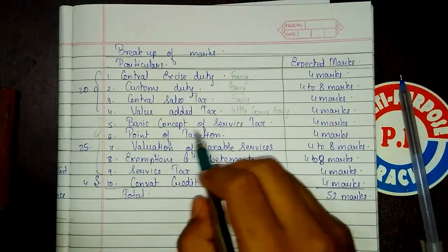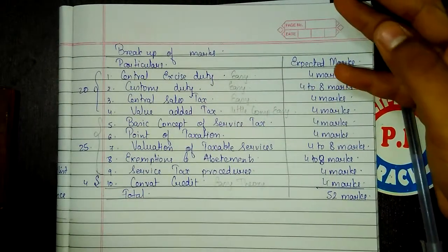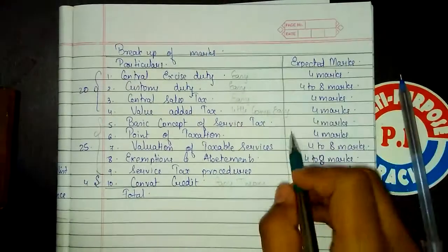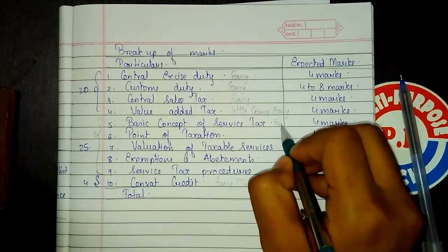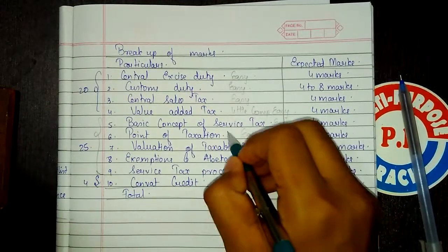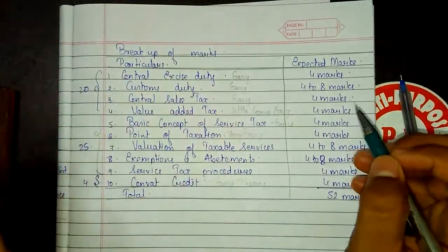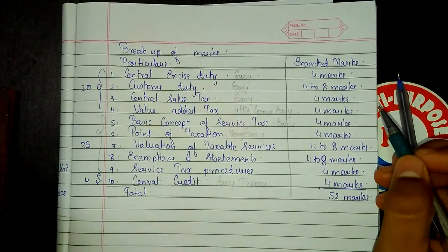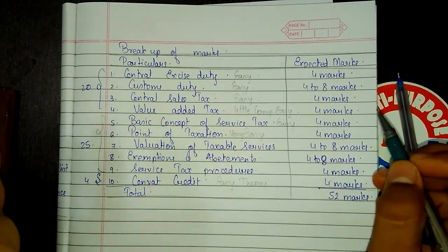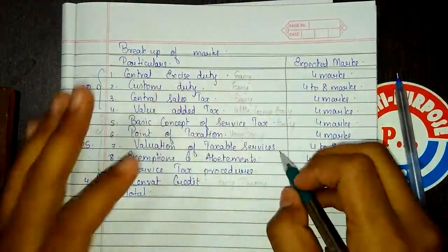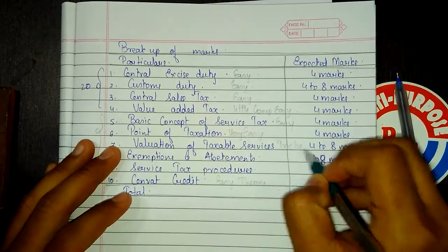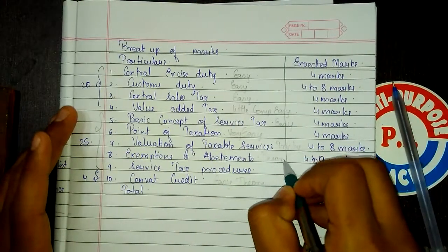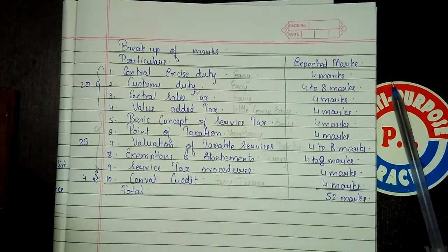Now let's put light on Service Tax. Basic concept of Service Tax: we have to study the negative list, mega exemption, and definitions related to service tax — that is good enough for 4 marks; this part is easy. Point of Taxation is the very easy part of entire indirect tax — trust me. Central Excise Duty and Custom Duty are the most simple things and you should never skip this part. Valuation of Taxable Service is a little bit tricky — 4 to 8 marks. Exemptions and Abatement is theory, an important chapter, a little bit tough — 4 to 8 marks, but we will make it simple.